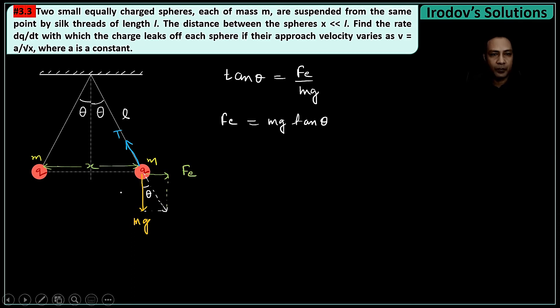Now what happens? By some way the charge gets leaked, so as the charge is leaking off the spheres, the electrostatic repulsion gets weak so they will come closer. As they come closer, they will approach and the approach velocity is given. One more thing is given: that x is much much smaller than l, which means that θ is very small. If θ is very small, I can approximate tan θ to be sin θ.